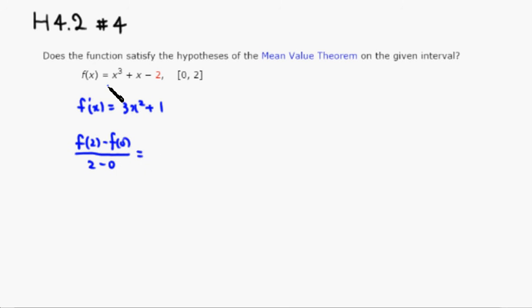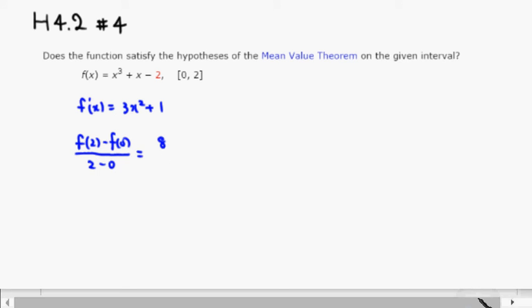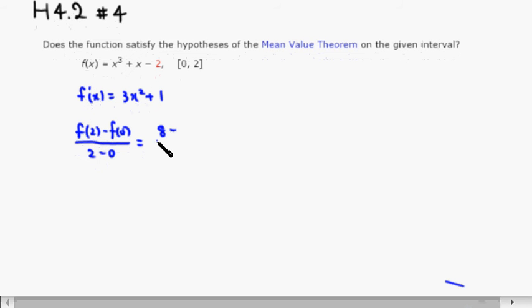So f of 2 would be 2 cubed which is 8, plus 2 is 10, minus 2 is 8. Wait, what did I do?